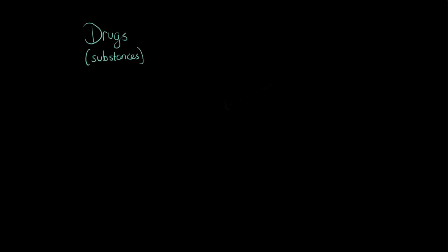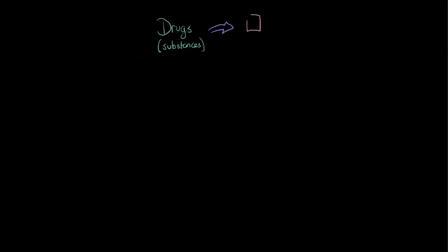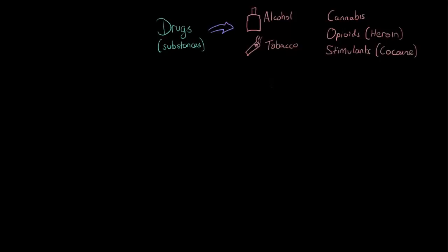Let's consider drugs — I'm also going to call them substances. There's a whole bunch of different drugs and substances that people use. Some of the most common ones include alcohol and tobacco, but also there's a range of others, including cannabis, opioids (that includes things like heroin), stimulants (that includes things like cocaine and amphetamines), hallucinogens (like LSD), inhalants, hypnotic sedatives, and other things. Let us not also forget one of the most commonly used substances, which is caffeine, commonly found in your mug of coffee or tea.